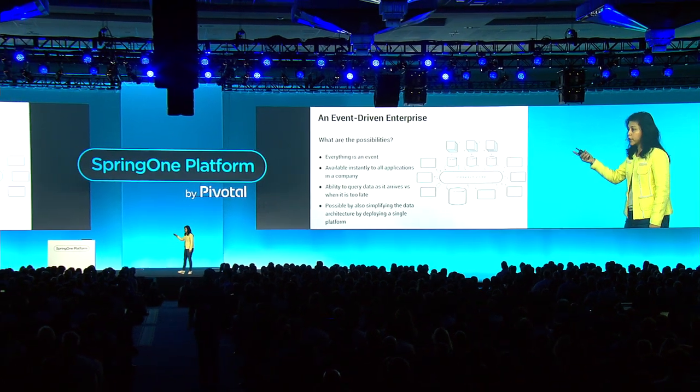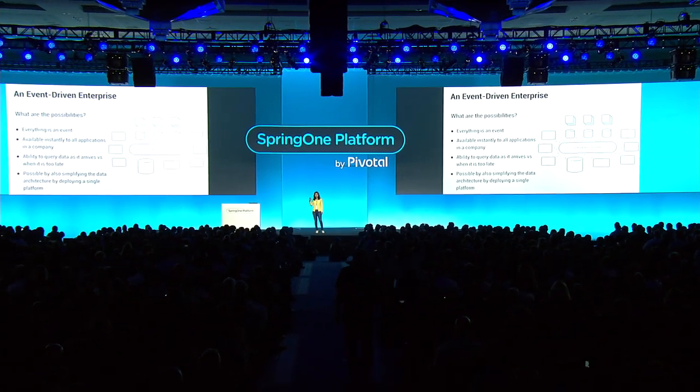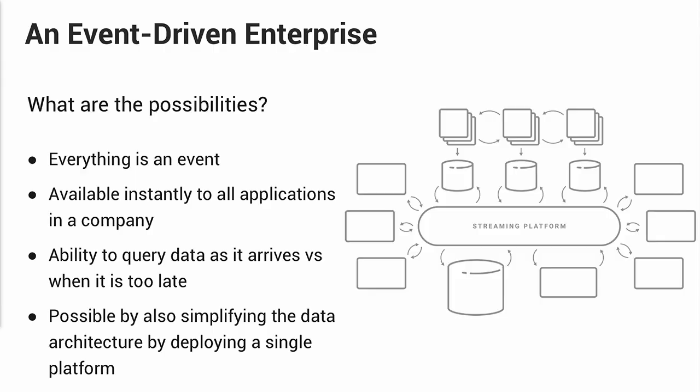I want to leave you with the end state: why would you do this, and what does an event-driven enterprise look like? The possibilities are immense. Everything happening in your business is an event, available instantly to all applications in the company that need to process it. You have the ability to query data and respond to it as it arrives, versus when it's too late. This is also possible by simplifying your data architecture — deploying a single platform that replaces your mesh of different ETL tools by relying on a central streaming platform.